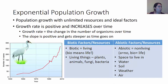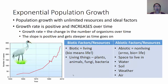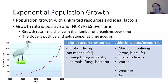The prefix 'a' means no or not, and 'bio' means life, so abiotic means non-living. Abiotic factors are things like space to live in, water, soil, weather, and air — non-living things that an organism really needs to survive. In an exponential situation, those things are unlimited and conditions are perfect, so the population is just going to increase and increase and increase.